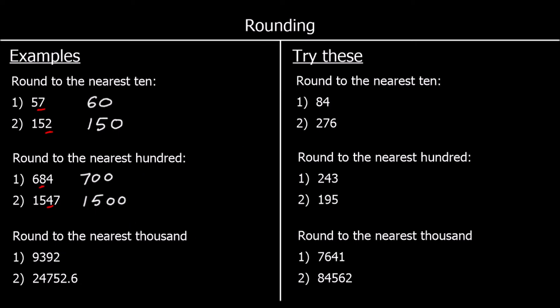And rounding to the nearest 1,000 — we find the thousands column and look at the next one down, which is the hundreds. Is it 5 or above? If it is, it rounds up; if not, it stays as it is. So 9,392 is not going to round up — it stays as 9,000, it's closer to 9,000 than it is to 10,000. 24,752.6 — we're only looking at the 7, and yes it is 5 or above, so it rounds up from 24,000 to 25,000 — it's closer to 25,000 than it is to 24,000.